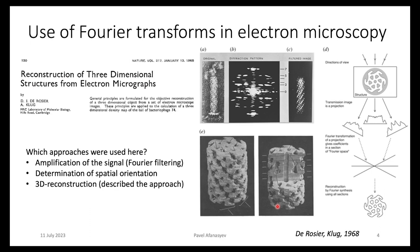The first time Fourier Transforms were used in electron microscopy was in the middle of the 20th century. That happened thanks to crystallographers who were starting doing electron microscopy. DeRosier and Klug were two scientists who studied the tail of the bacteriophage T4. They used methods from X-ray crystallography for determination of 3D reconstruction from an object, and they used Fourier analysis to obtain the structure of the bacteriophage T4 tail.